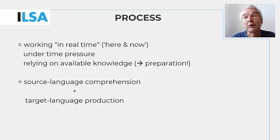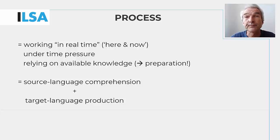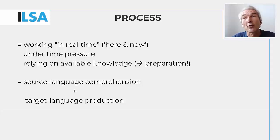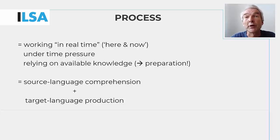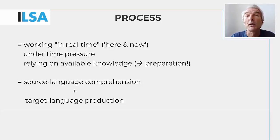Effective preparation for an interpreting assignment is therefore extremely important, as will be explained in more detail in Unit 3 of this module. The interpreting process essentially consists in source language comprehension followed by target language production in real time. Effective comprehension of the source message is obviously fundamental, as the interpreter can only re-express what has first been fully understood.